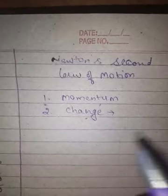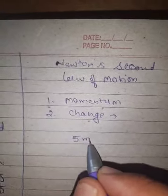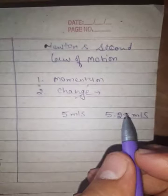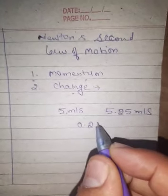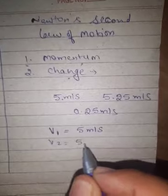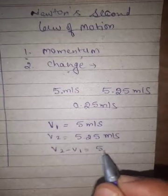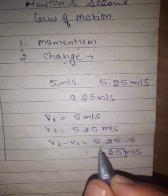We have to understand the concept of change. For example, if a body's initial velocity is 5 meters per second and after some time the velocity increases to 5.25 meters per second, we are getting some change. If initial velocity V1 is 5 m/s and V2 is 5.25 m/s, then the change is V2 minus V1, which gives us 0.25 meters per second. We are getting this much change in velocity.